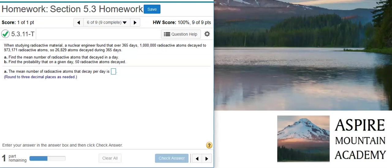Howdy, I'm Professor Curtis of Aspire Mountain Academy, here with more statistics homework help. Today we're going to learn how to find probabilities and mean values of radioactive decay. Here's our problem statement: When studying radioactive material, a nuclear engineer found that over 365 days, 1 million radioactive atoms decayed to 973,171 radioactive atoms, so 26,829 atoms decayed during 365 days.